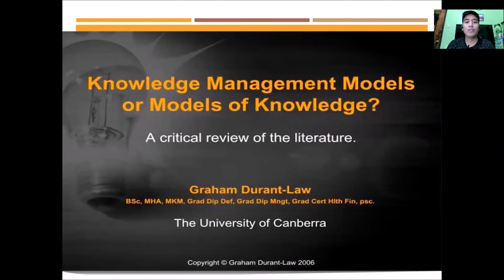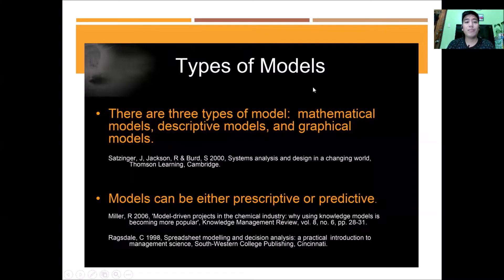I just based this from the presentation of Graham Durand-Law on the knowledge management models from the University of Canberra. A model is an intellectual construct in artifact form that provides an abstract, highly formalized, often visual yet simplified representation of a phenomenon and its interactions. Models can be mathematical, descriptive, and graphical, but this can be classified into two categories: descriptive and prescriptive. Descriptive models attempt to characterize the nature of KM phenomena, whereas prescriptive models describe methodologies to follow in conducting knowledge management, according to Holsapple and Joshi in 1999.